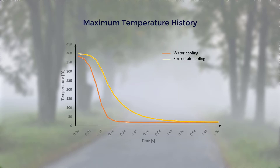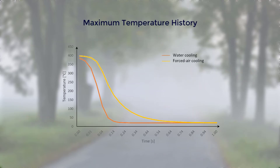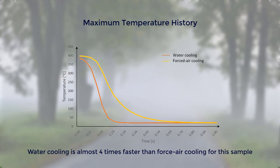We'll apply convection boundary condition to all the faces of the stent except the cyclic boundaries, with an ambient temperature of 20 degrees Celsius. After solving the simulation and plotting the maximum temperature history for both scenarios, it's evident that quenching in water is more effective. At 0.09 seconds, the maximum temperature is around 49 degrees Celsius for water cooling and 234 degrees Celsius for forced air cooling. Water cooling took about 0.25 seconds to cool from 400 to 20 degrees Celsius, while forced air took almost one second — making water cooling nearly four times faster.